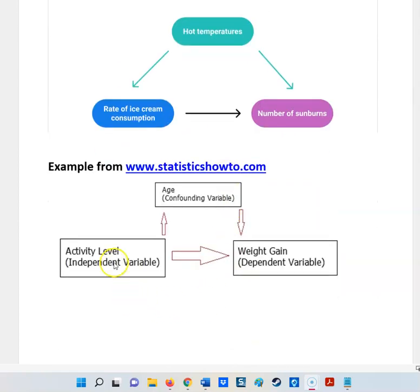And the last one could be if they were looking at amount of activity somebody does and their weight gain. Well, if they don't talk about age, age has an impact on activity level and weight gain. And so that could be a confounding variable that's messing up the study.